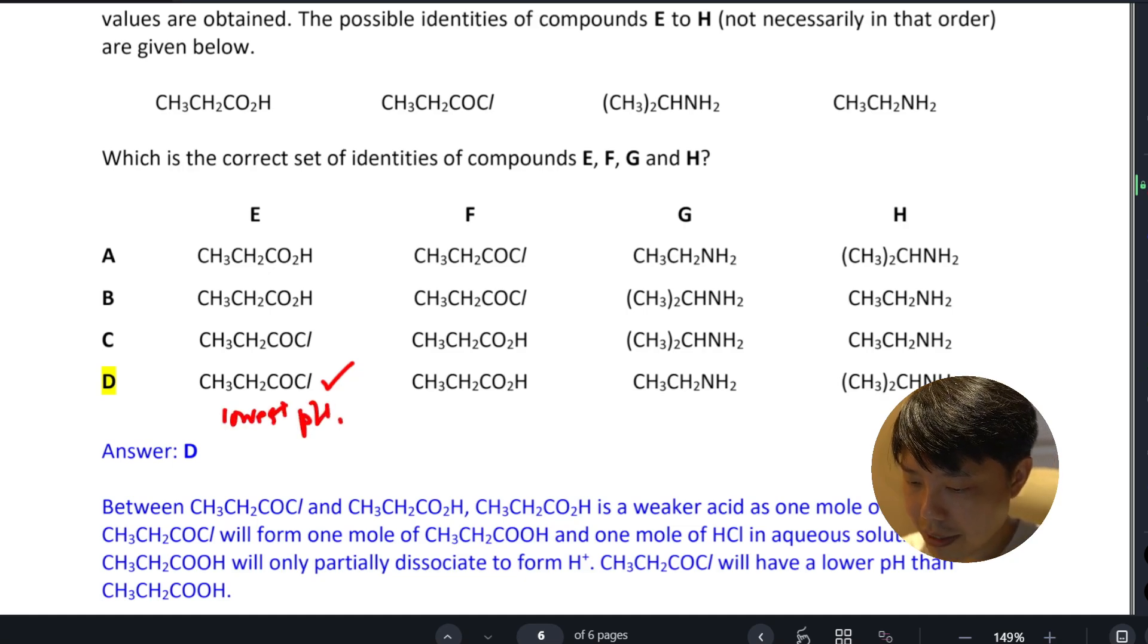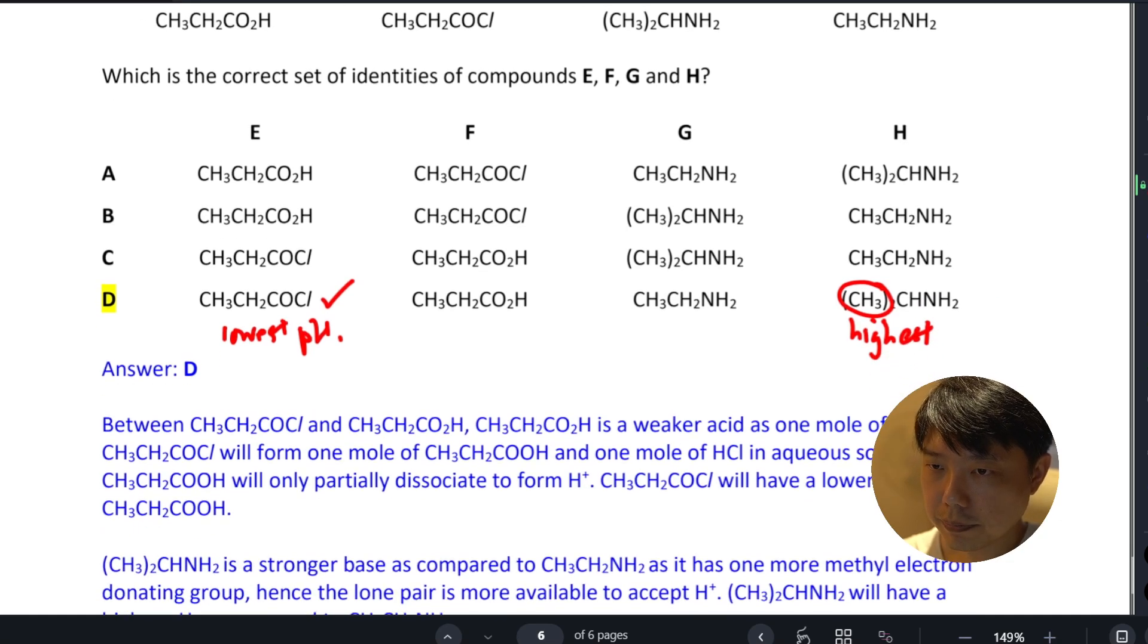The highest pH will be this amine group because it has an electron-donating methyl group which makes the lone pair more available. And then, this is a weak acid, while this is your weak base.